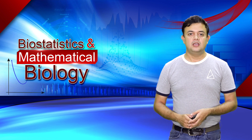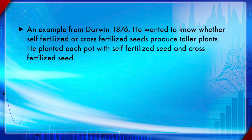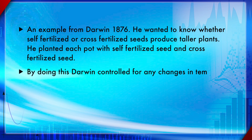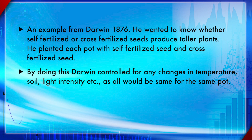One example is Darwin's 1876 paper. He wanted to know whether self-fertilized or cross-fertilized seeds produce taller plants. He planted each pot with both a self-fertilized seed and a cross-fertilized seed, so each pot had two seeds. By doing this, Darwin controlled for any changes in temperature, soil, light intensity, etc., since all conditions would be the same within each pot — a very cleverly designed experiment.